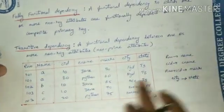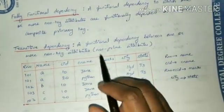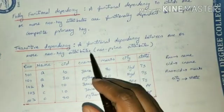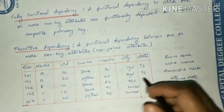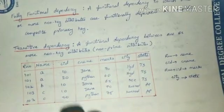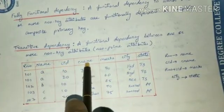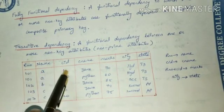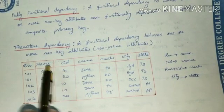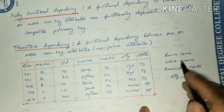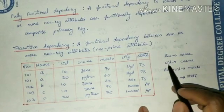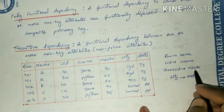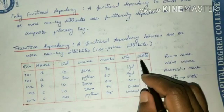Now coming to transitive dependency. Transitive dependency is a functional dependency between one or more non-key attributes. Consider this example: a student table with roll number, name, course ID, course name, marks, city, and state. Roll number plus course ID is the composite primary key as usual. Roll number will determine name, course ID will determine course name, roll number plus course ID will determine marks, and city will determine state.